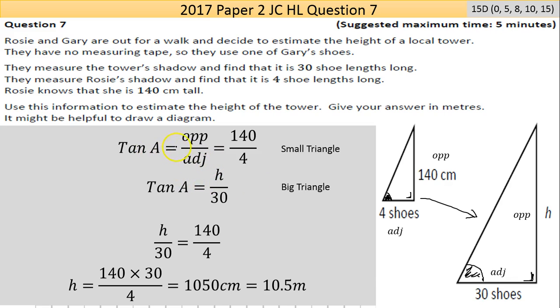Now I have to do tan of the angle equals opposite over adjacent, that's 140 over 4. I can leave it as that if I want. If I'm using the big triangle here, I'm using the exact same ratio. Tan of an angle equals some height over 30. I could have done this a few different ways - could actually find the angle and then use your tan of the angle, or just keep it general.